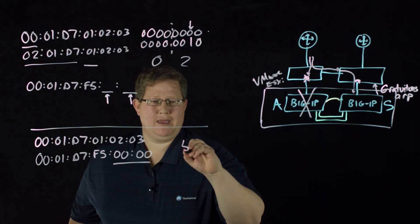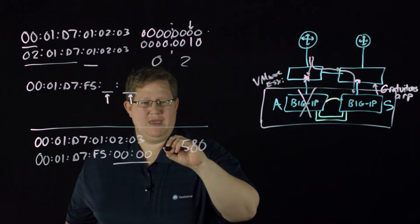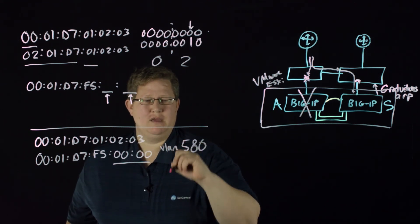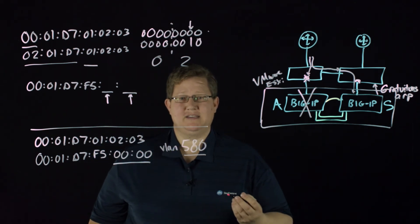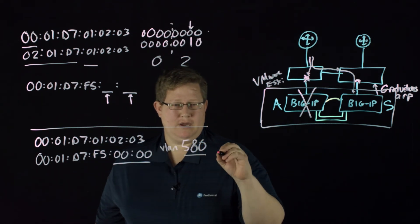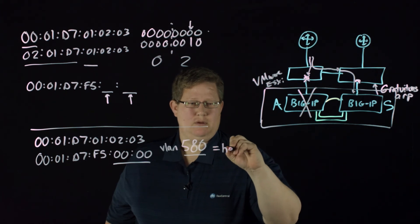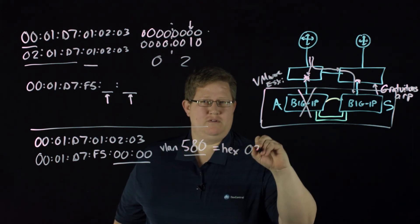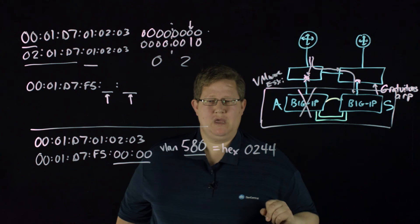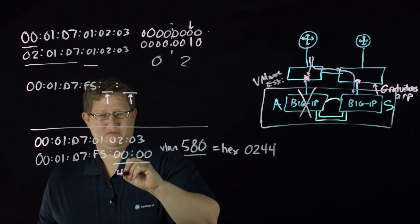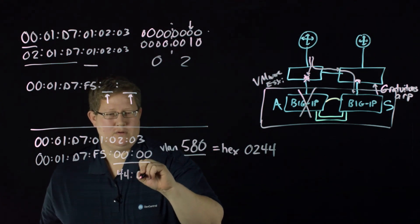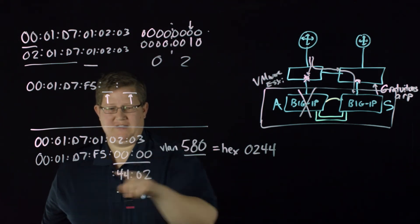So if we have a VLAN address of 580, if the VLAN tag is 580, in hex that equals hex 0244. And what it'll do is it'll reverse those two octets, and so this becomes 4402 in this address.